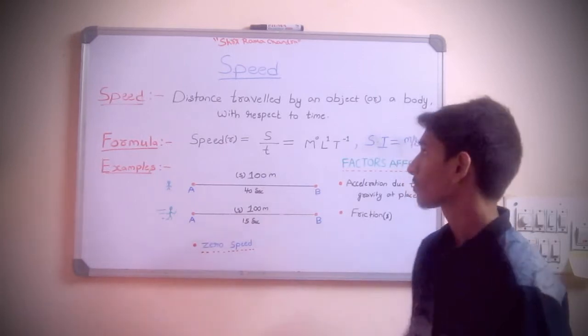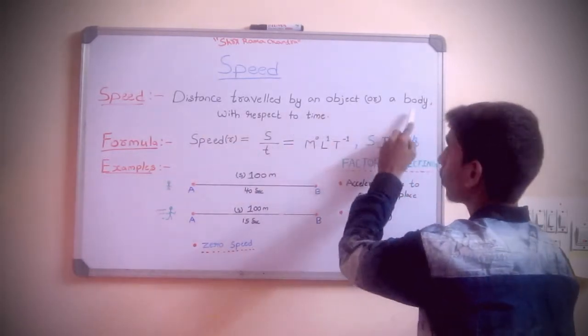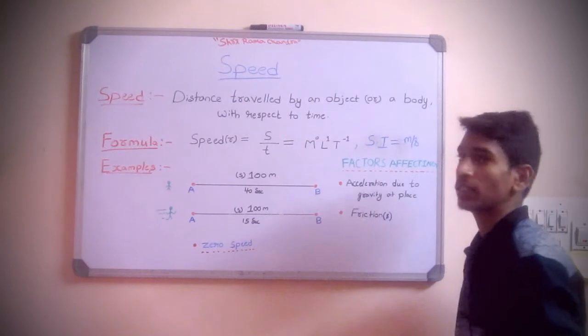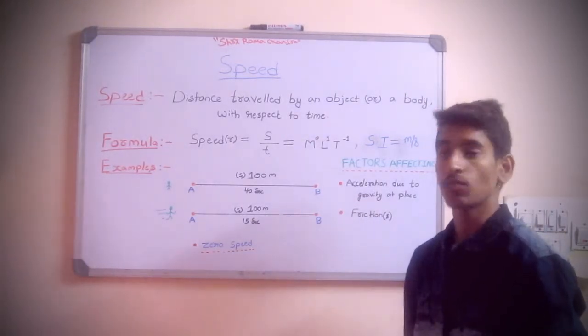So let's go into the topic. What is the definition of speed? Speed is defined as distance travelled by an object or a body with respect to time. It can also be defined as the quickness of an object or how fast an object is moving.